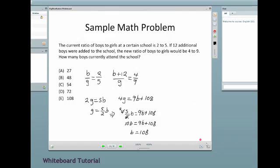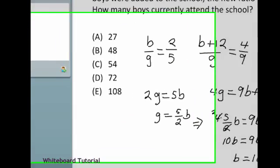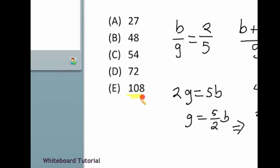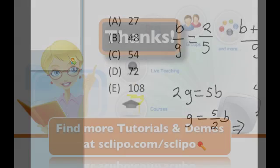So if we zoom back out, we can see that the answer is E. And I'm just going to highlight it for the remote students. There we go. That's the answer. And that's an overview of the whiteboard controls.